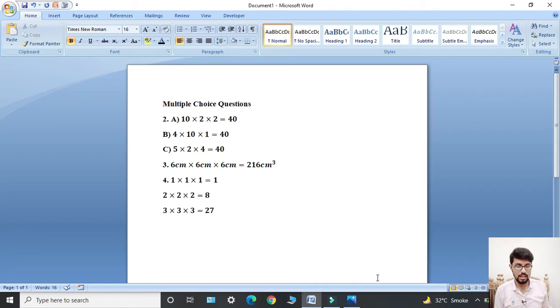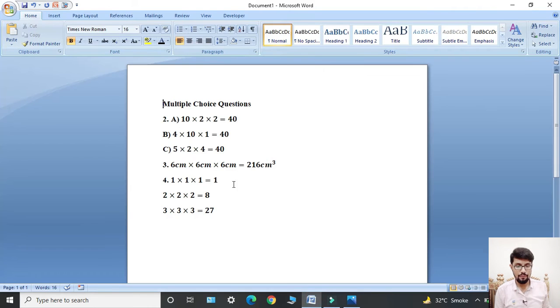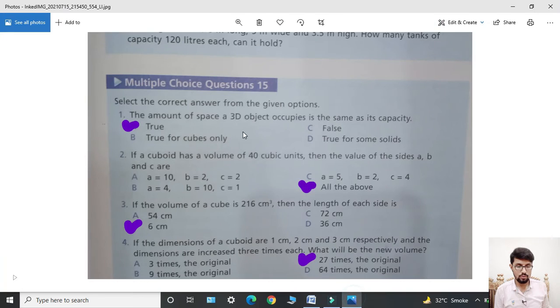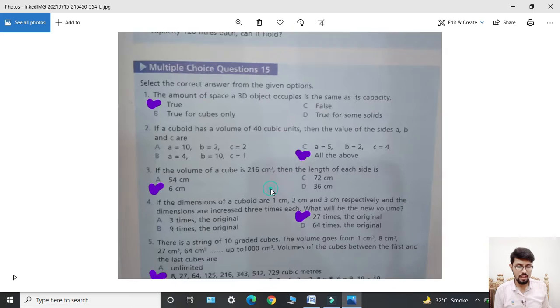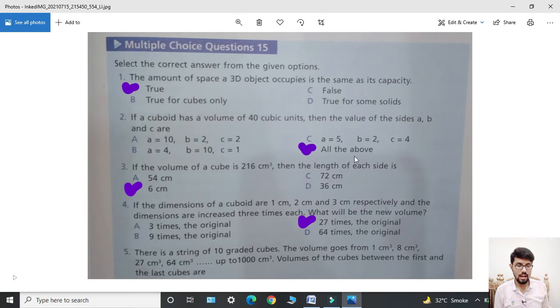In option B: a = 4, b = 10, c = 1. Multiply these: 4 × 10 × 1 also equals 40. In option C: a = 5, b = 2, c = 4. Multiply: 5 × 2 × 4 equals 40. So the correct answer is 'all the above'.